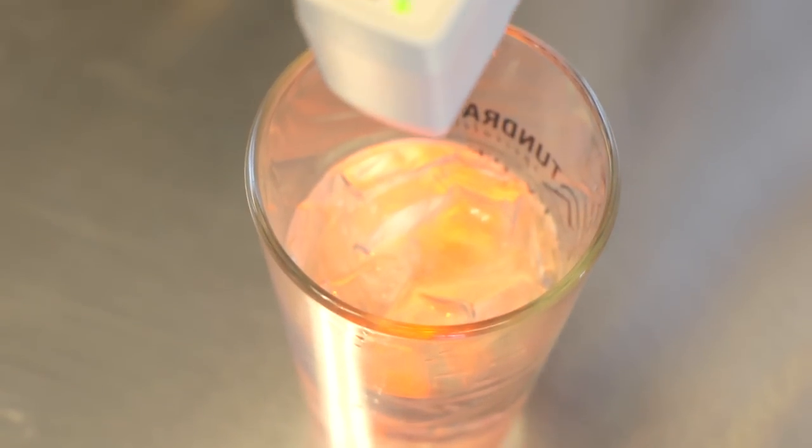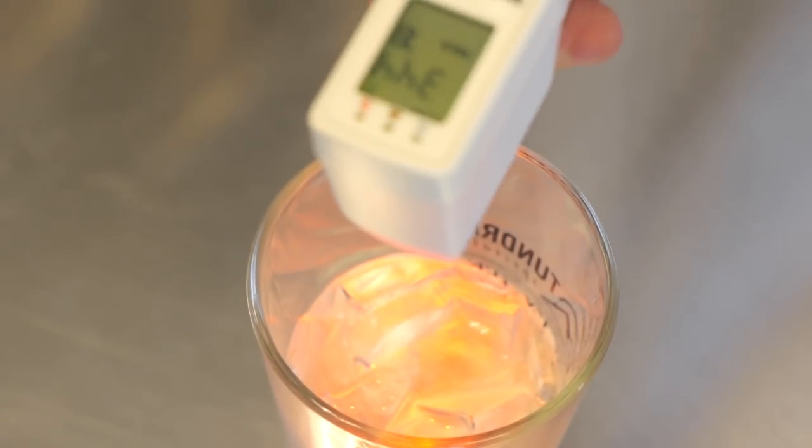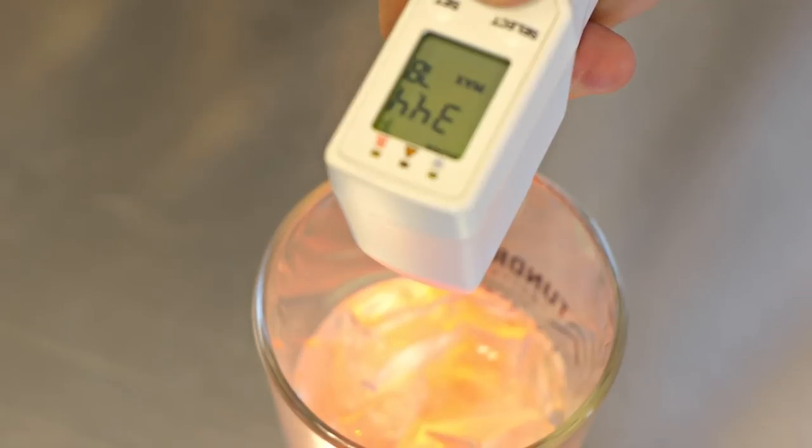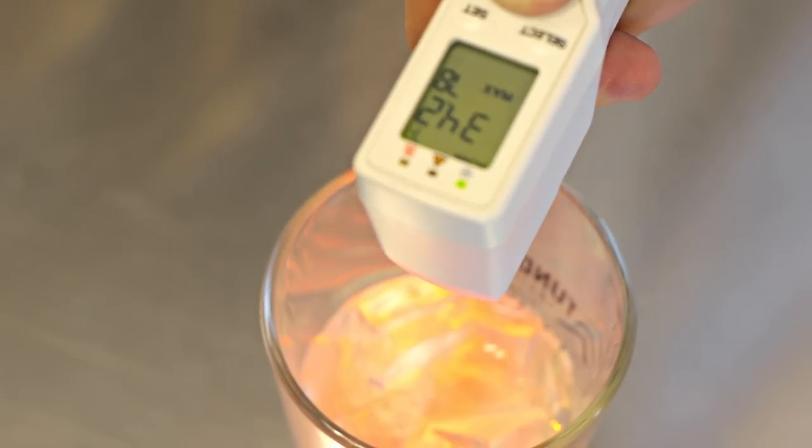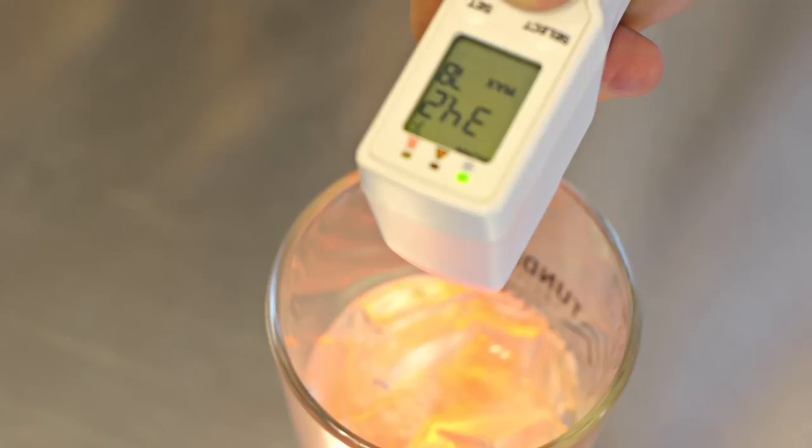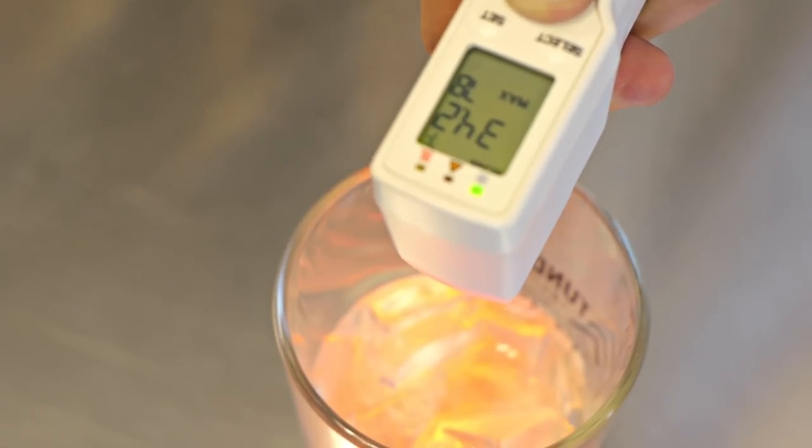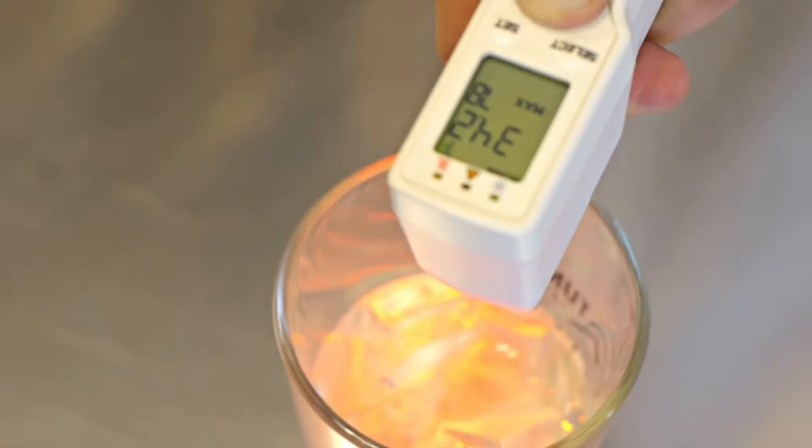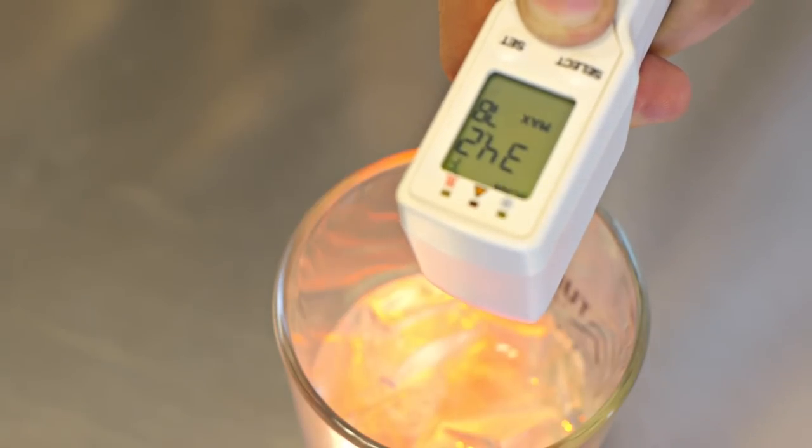We're going to probe the dead center of the glass, not to the edge of the rim, not to the side of the actual table, but we need to be in the exact center of the glass. Let it sit there for a few seconds so that way it can get a full read. The nice thing about these thermometers is they're pretty instantaneous and right now we've got a reading of 34.2 degrees.